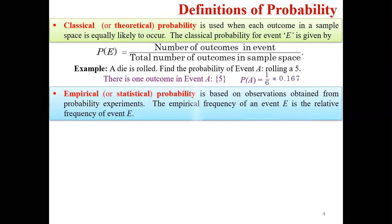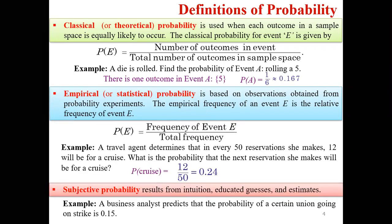Before going into detail about events, we have defined probability. We can divide probability into three types: one is the classical or theoretical definition of probability; another is the empirical or statistical definition of probability; and the third is the subjective definition of probability.